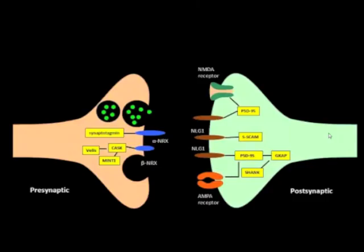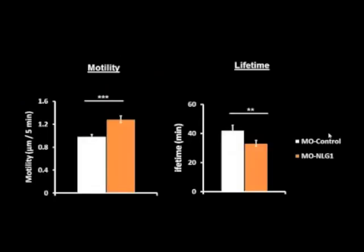We also blocked norexin-neoligand-1 interactions by knocking down endogenous neoligand-1 using morpholino oligonucleotides. Knocking down neoligand-1 prevents philipodia from stabilization, shown by decreased philipodia lifetime and high motility.